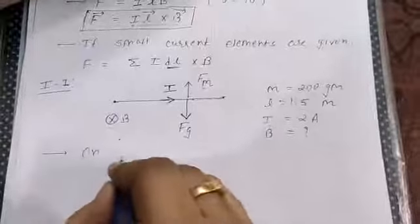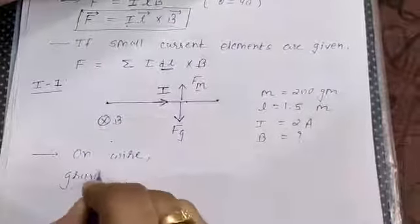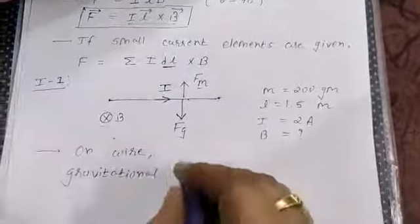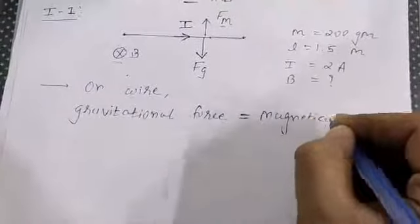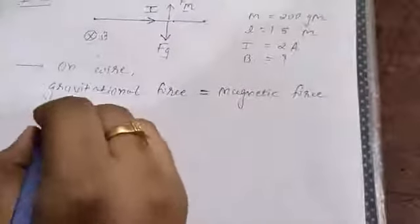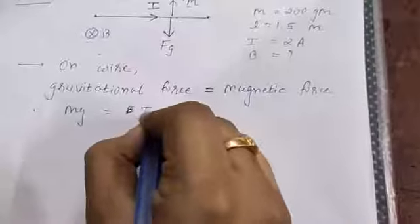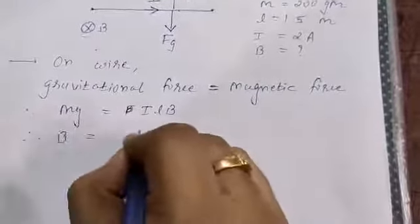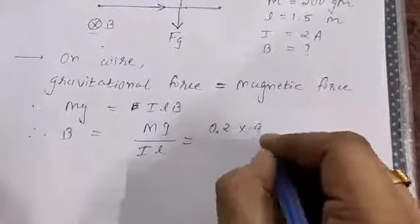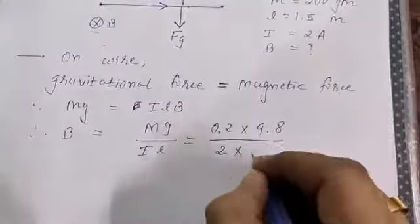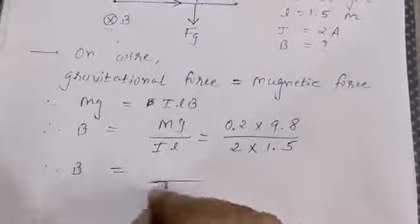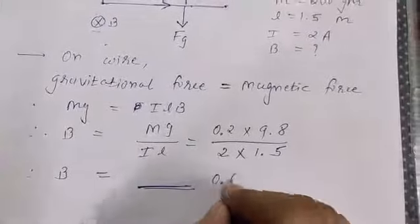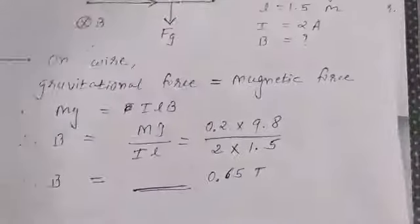So we can say that on the wire, gravitational force equals magnetic force: Mg = ILB. Making B the subject: B = Mg / (I·L). Putting all values — M is 200 grams = 0.2 kg, g is 9.8, current I is 2, and length is 1.5 — you can calculate and find the magnetic field B equals 0.65 Tesla. This is the answer.